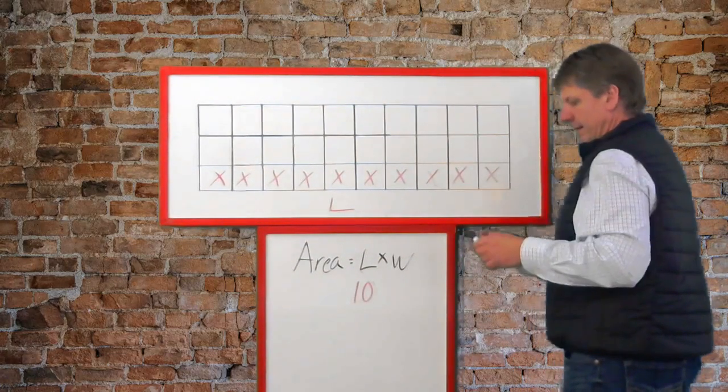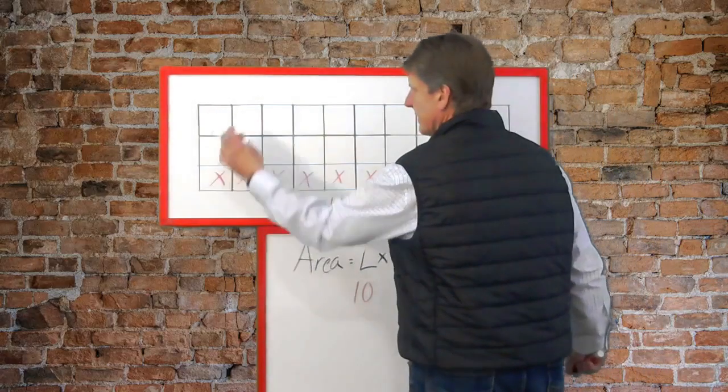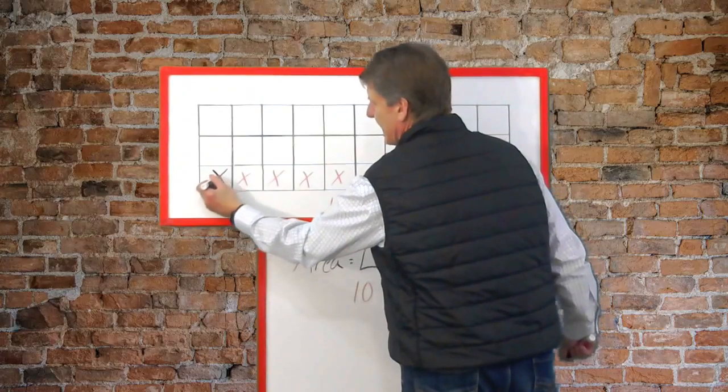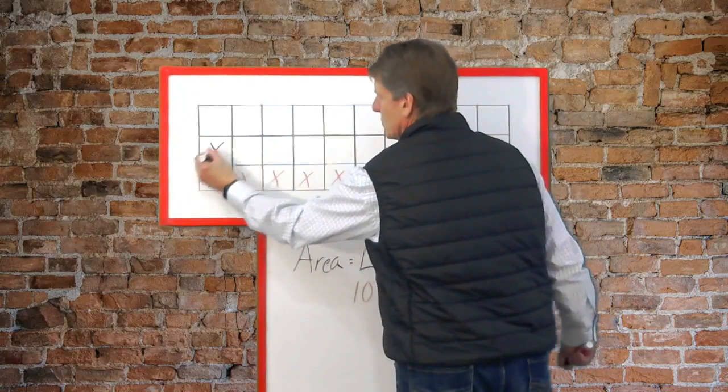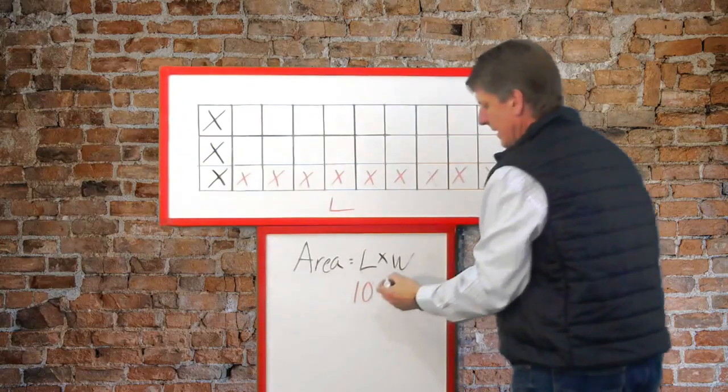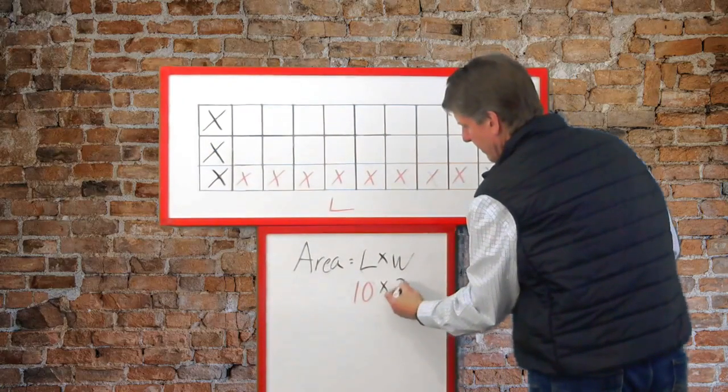Now let's find its width. So here's what sometimes gives students a little trick here, but you got to count this one again. One, two, three. So its width is three.